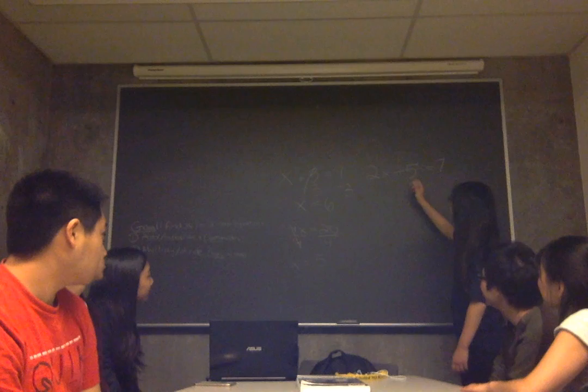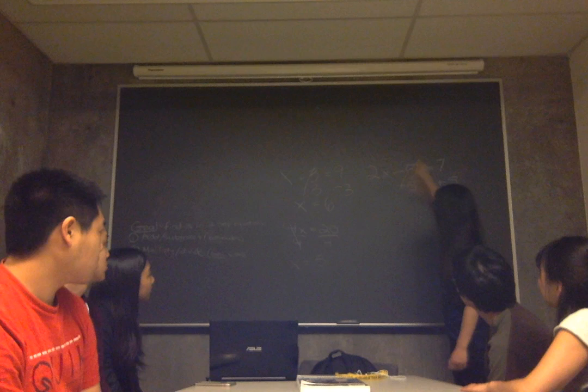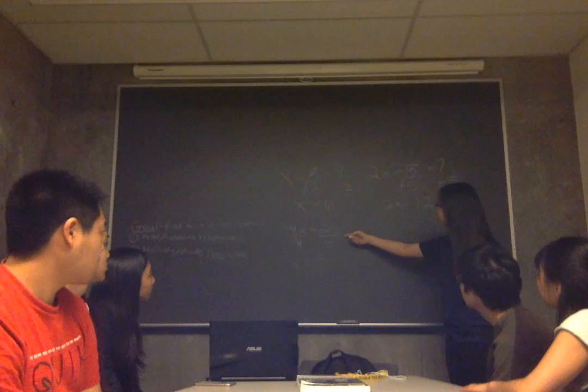So, here, we're subtracting 5, and we're going to do the opposite. So, you're right. We're going to add. So, add 5, then we're going to add 5 on this side too, right? So, these two cancel each other out, and we're left with 2x equals 12.